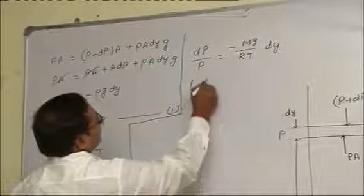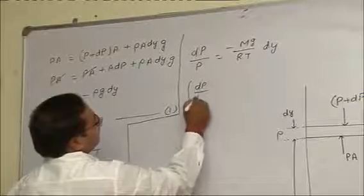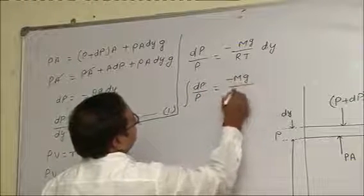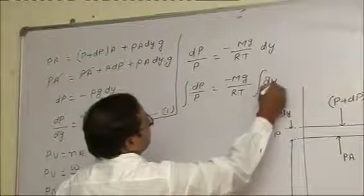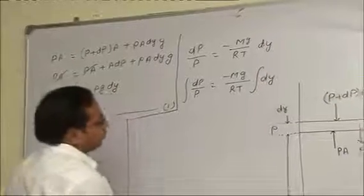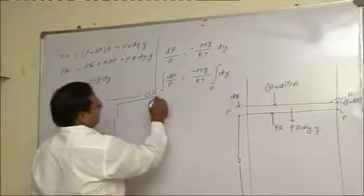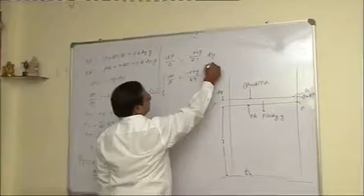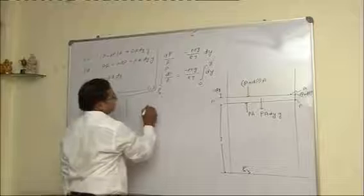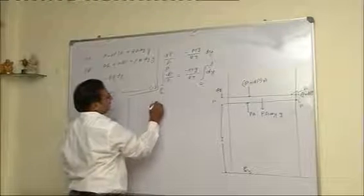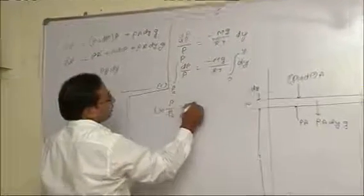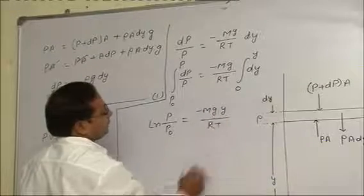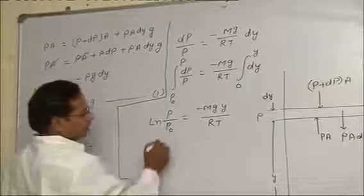We integrate this. dP by P equals minus mg by RT dy. When height was 0, pressure was P not. And when height is y, pressure is P. When we solve this, we write ln P by P not equals minus mgy upon RT.